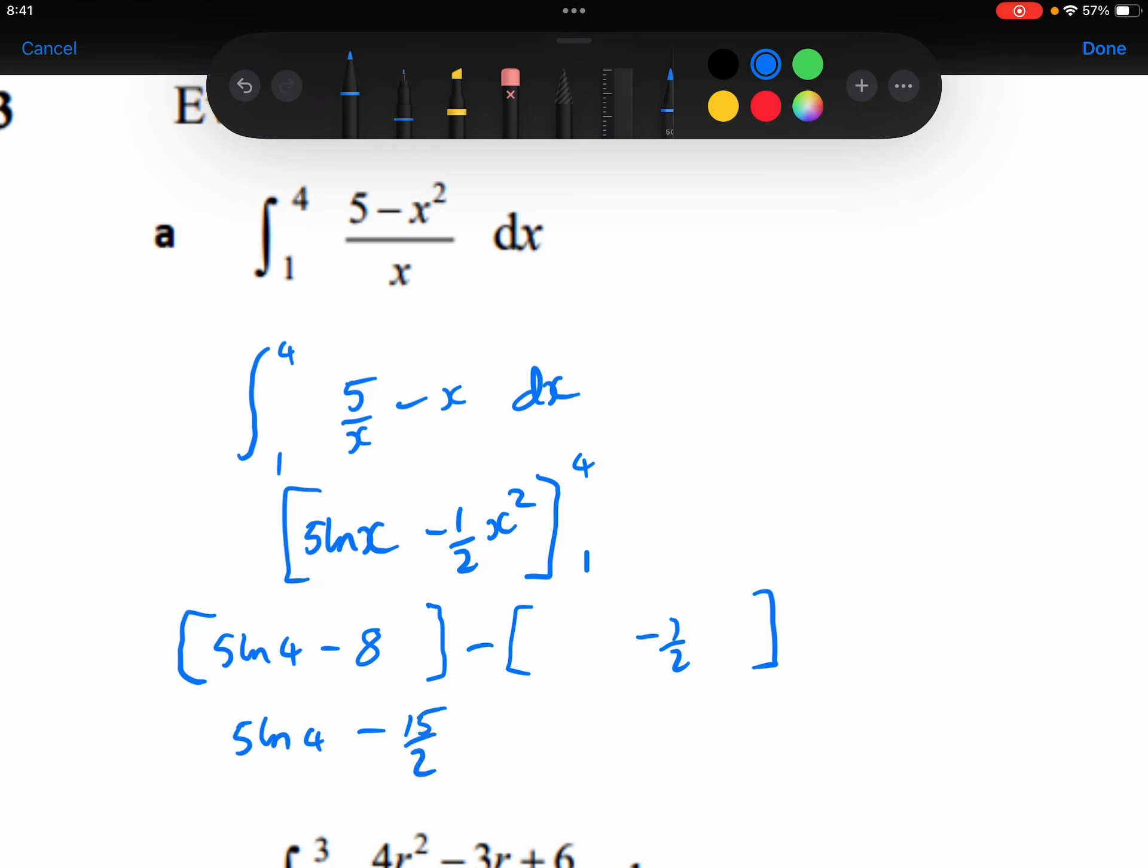The only other thing I might do is the ln 4. I can simplify that because the 4 is 2 squared, and I can then bring that 2 to the front to be 10 ln 2.